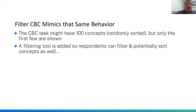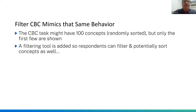Filter CBC mimics that same behavior in a CBC experiment. The CBC choice task might have a hundred concepts that are initially randomly sorted. We could use Sawtooth Software's program to show a hundred concepts in each choice task, but probably only show the first few on screen — just like Expedia only shows a few. A filtering tool is added using custom programming, allowing respondents to filter and potentially sort the hundred or so concepts per choice task.